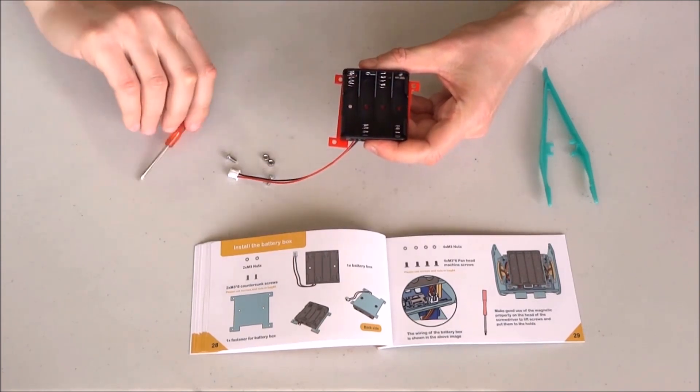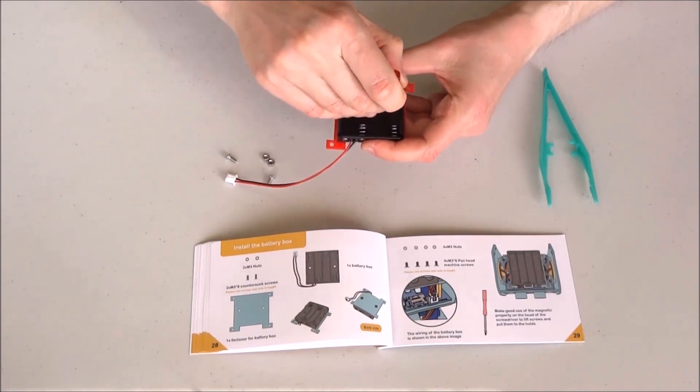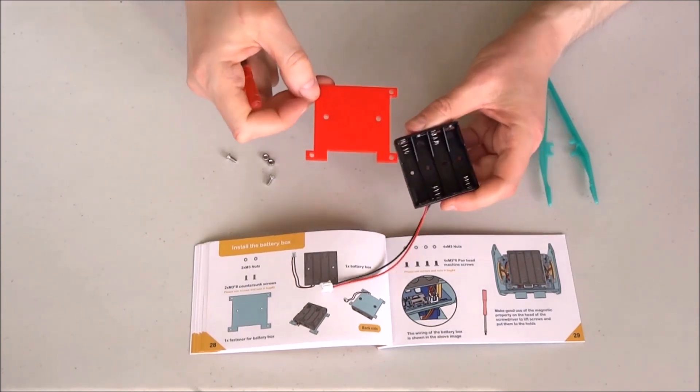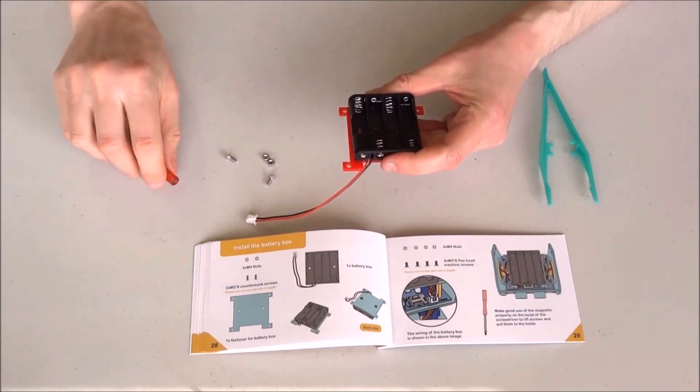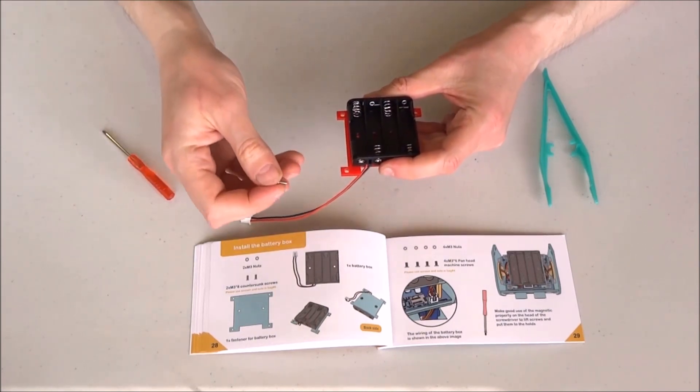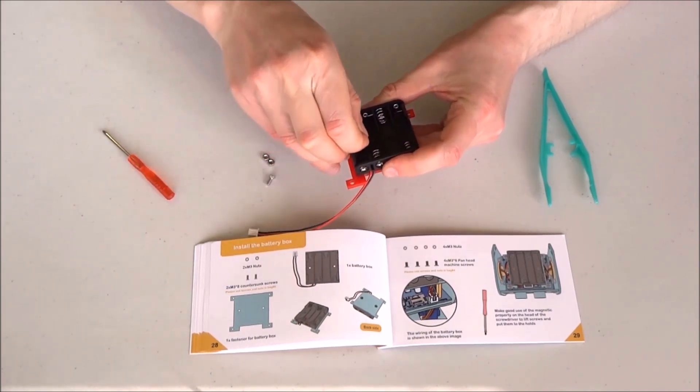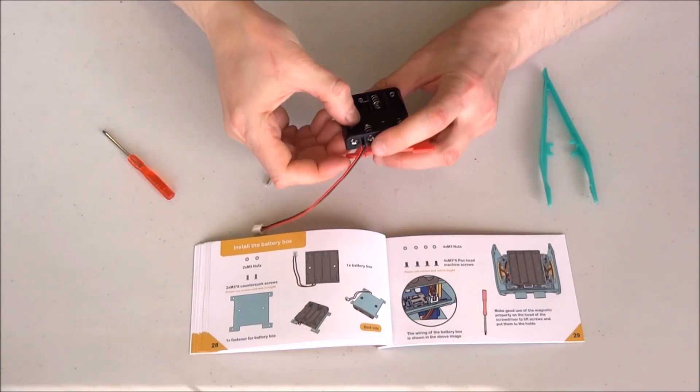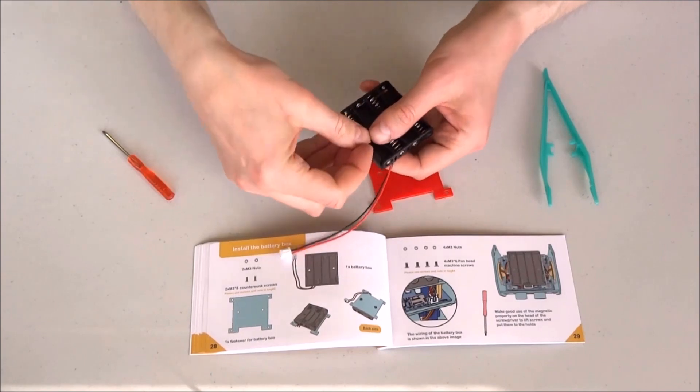We align the battery box in such a way that two of its holes here and here match the holes on the base plate. Take a bolt and insert it through the hole of the battery box like this.